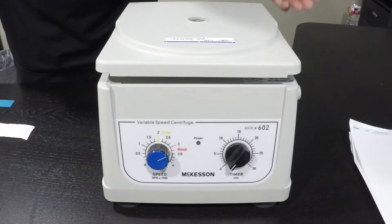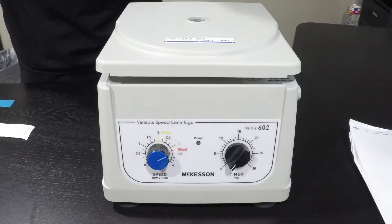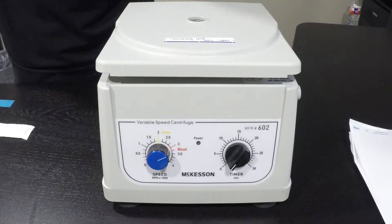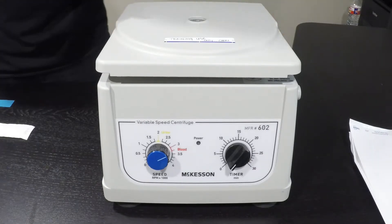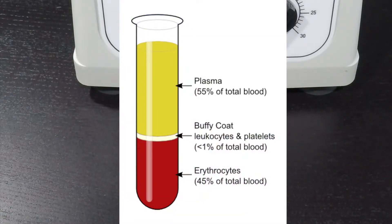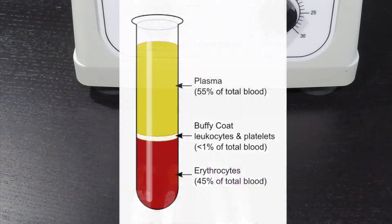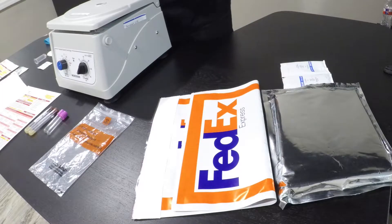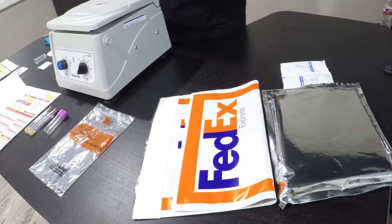Once the tiger tops have been spun, the blood has been broken down into 3 different serums, which lets the MA know that the specimen is ready for shipment. Now we will go over the shipping process for the blood wellness panel.